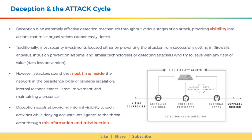Deception is an extremely effective detection mechanism throughout various stages of an attack, providing visibility into actions that most organizations cannot easily detect. Traditionally, most security investments focused either on preventing the attacker from getting in — like firewalls, antivirus, and intrusion prevention systems — or detecting attackers trying to leave with data, like data loss prevention. However, attackers spend the most time inside the network in the persistent cycle of privilege escalation, internal reconnaissance, lateral movement, and maintaining a presence. Deception excels at providing internal visibility to such activities while denying accurate intelligence to the threat actor through misinformation and misdirection.